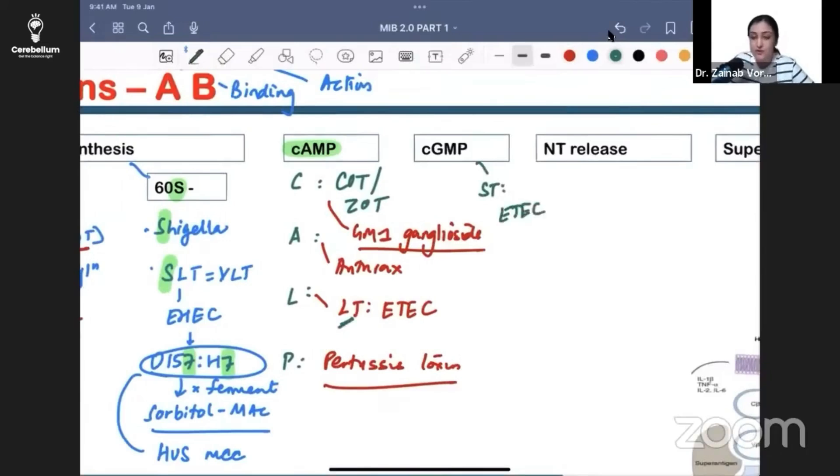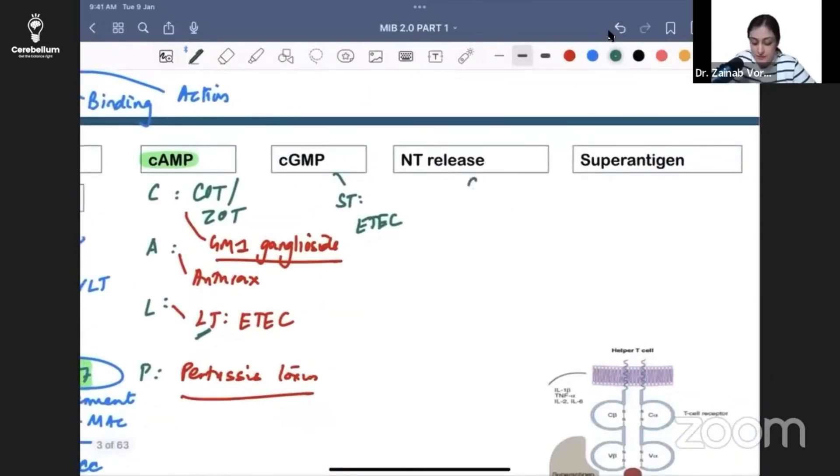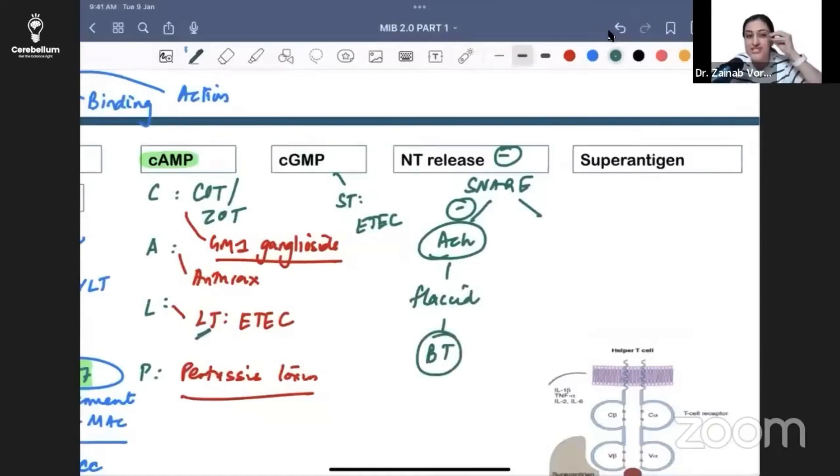Neurotransmitter is released by SNARE proteins. Two things can be inhibited: if I inhibit acetylcholine, contraction is inhibited - what paralysis will we get? Flaccid paralysis. This is by botulinum toxin. That's why botulinum toxin relaxes muscles - aging wrinkles disappear. If you have achalasia, relaxation will occur.